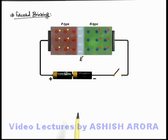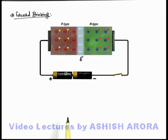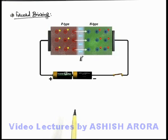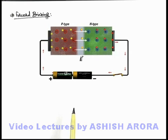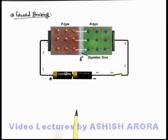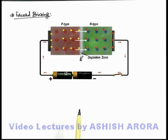Now in this situation, when we close the switch, initially the electric field in the depletion layer was from right to left, and an external electric field due to the battery is applied from left to right, which dominates the internal electric field. Due to this, charge carriers start flowing — holes from the p side to the depletion zone and electrons from the n side to the depletion zone, where they combine and neutralize each other.